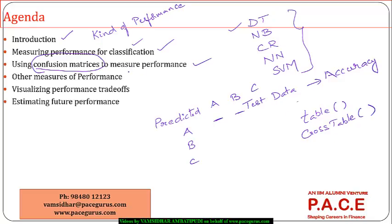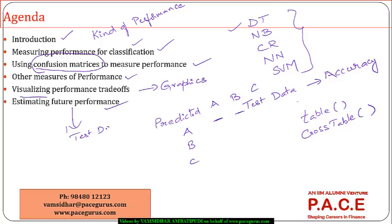We need to look at the various measures of performance that can be used for classification models, and how to visualize these things graphically. Finally, what kind of models can I use for estimating future performance where I don't have information regarding the data for which I am going to make the prediction? So, taking it with respect to the test data, from a real-world perspective, what are the various techniques available?